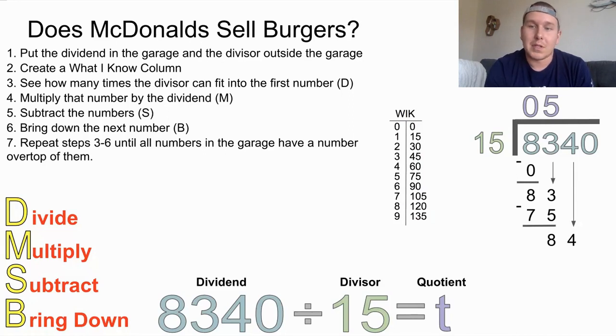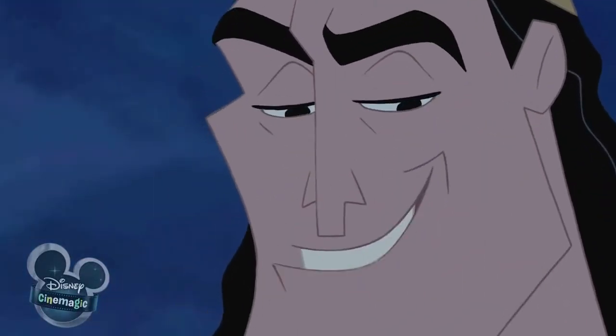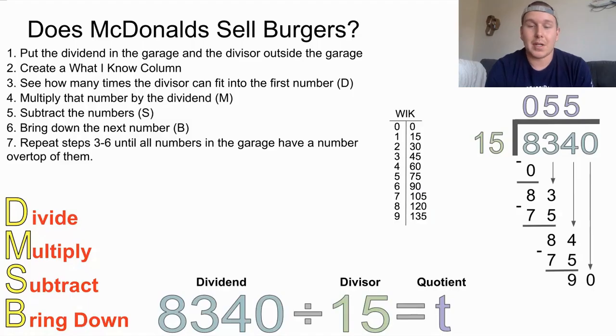So 5 times 15 will give us 75. Then we're going to subtract these two numbers to get us 8. And then we're going to bring down the next number. So now we have a number of 84. So we start back over. We ask ourselves, how many times can 15 fit into 84? 84 is not much bigger than 83. So it looks like we're going to use that 75 again. So we're going to use 5 times 15 will get us 75. We subtract these two numbers and it gives us 9. Then we bring down the 0. Oh, yeah. It's all coming together.